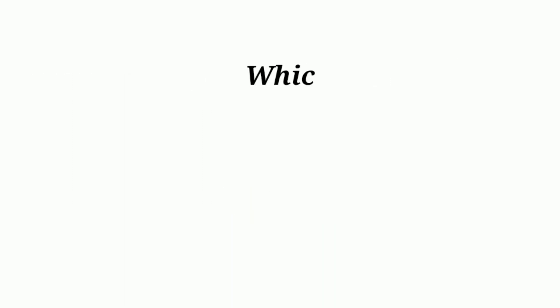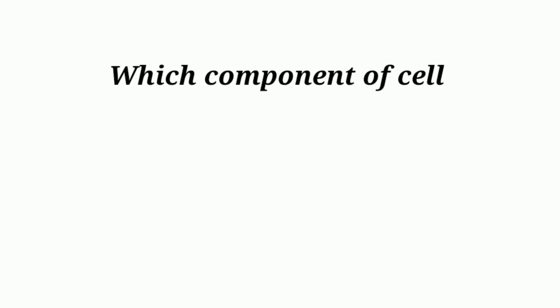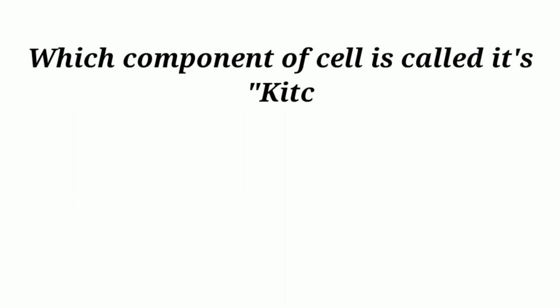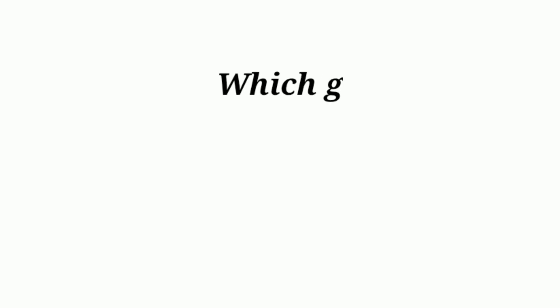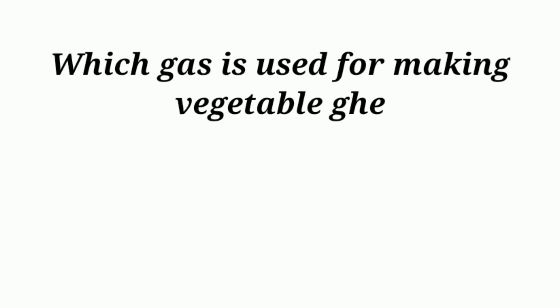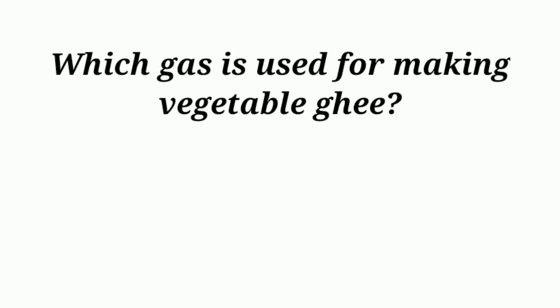Which component of the cell is called its kitchen? Chloroplast. Which gas is used for making vegetable ghee? Hydrogen.